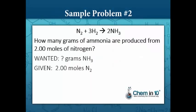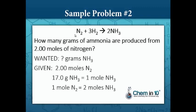Let's do this step by step. We need the molar ratio between moles of ammonia and moles of nitrogen. The balanced equation tells us that one mole of nitrogen makes two moles of ammonia. Also, the other conversion factor is that one mole of ammonia weighs 17 grams. So we need to first convert moles of nitrogen to moles of ammonia, and then convert that to grams.